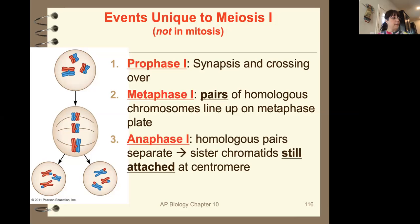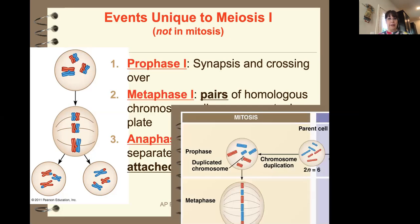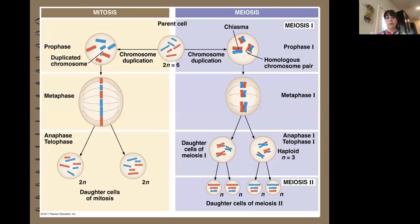The events unique to meiosis one: prophase one, where synapsis and crossing over occur; metaphase one, where pairs of homologues line up; and anaphase one, where the homologues separate. Here's a picture showing the differences between mitosis and meiosis pictorially.